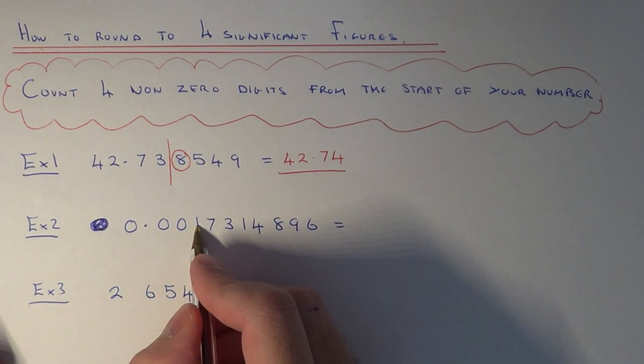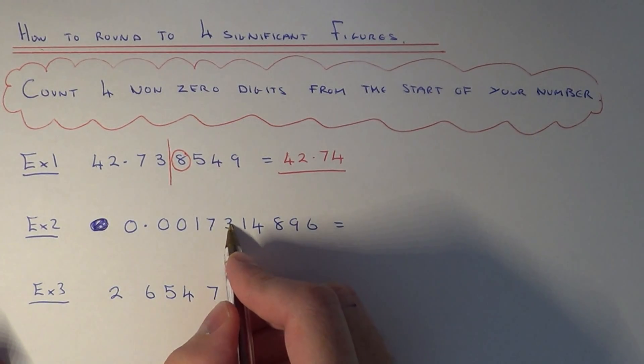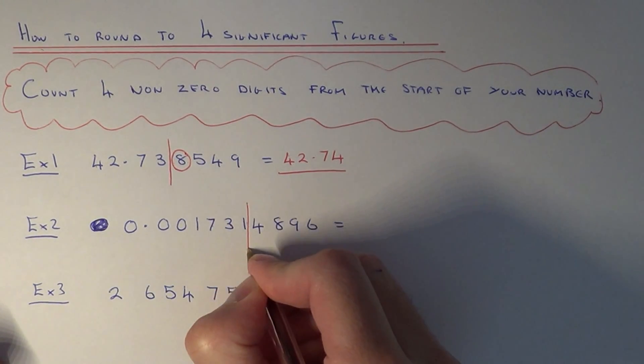Our first sig fig is the one, the seven is the second, the third is the third, and the one is the fourth. So we're cutting the number off here.